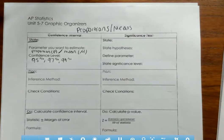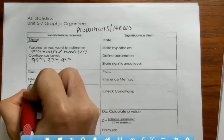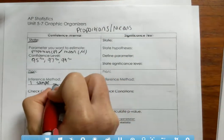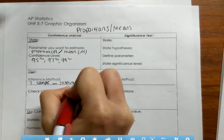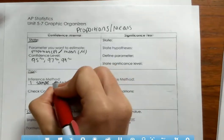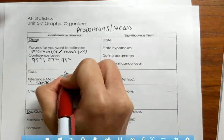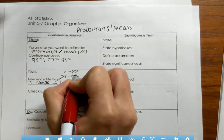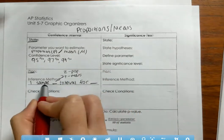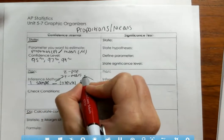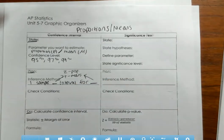The next piece is plan. You're going to name your inference method — a one-sample blank interval for blank. If it's proportions, it's going to be a Z interval; if it's means, it's going to be a T interval. So: one-sample Z interval for proportions, one-sample T interval for means. You use Z for proportions and T for means.